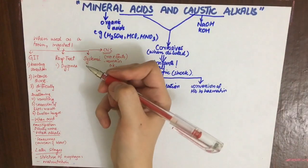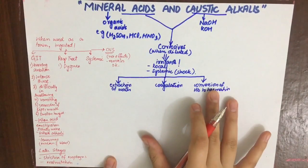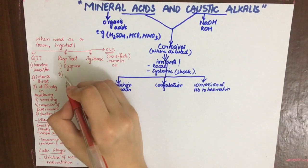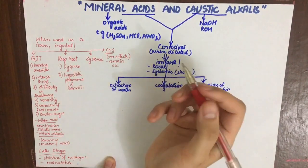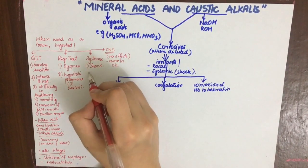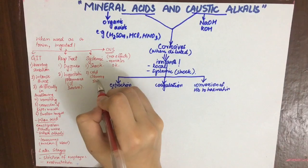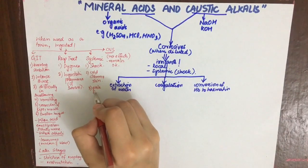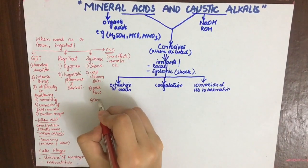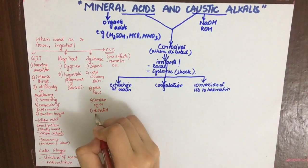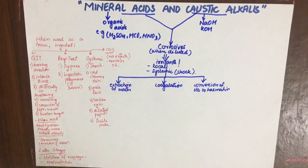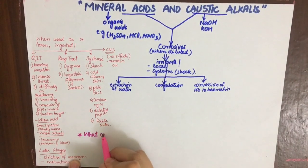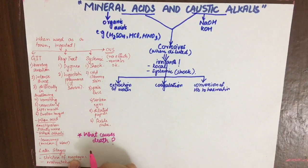Respiratory tract symptoms include dyspnea due to edema of the glottis, especially with strong fuming liquids. Small quantities can also be inhaled, resulting in hypostatic pneumonia. Systemic symptoms include shock, cold clammy skin, pale face, sunken eyes due to dehydration, dilated pupils, and feeble pulse.